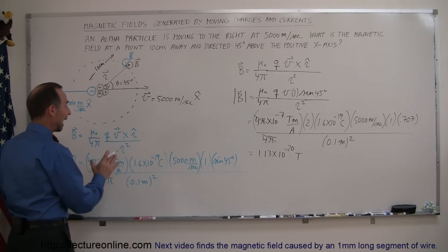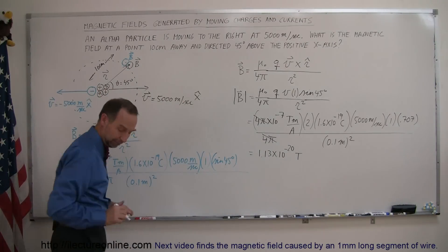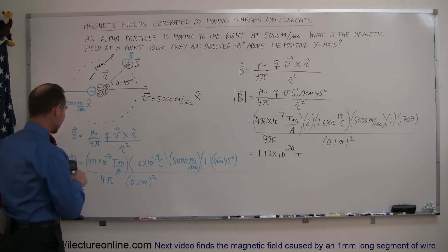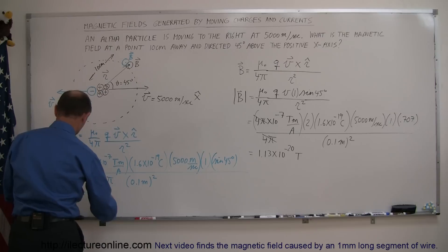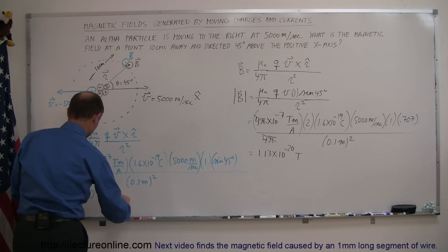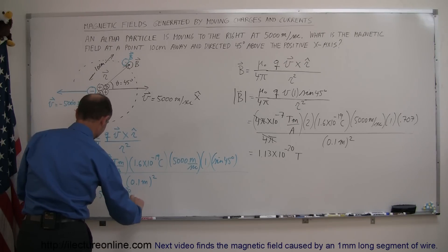And so that means that we'll end up at half the value of this right there, so we take that value divided by 2, and so this is equal to 0.566 times 10 to the minus 20 Teslas.